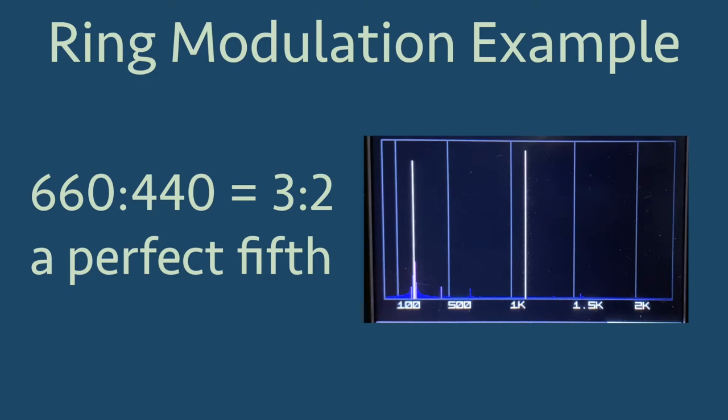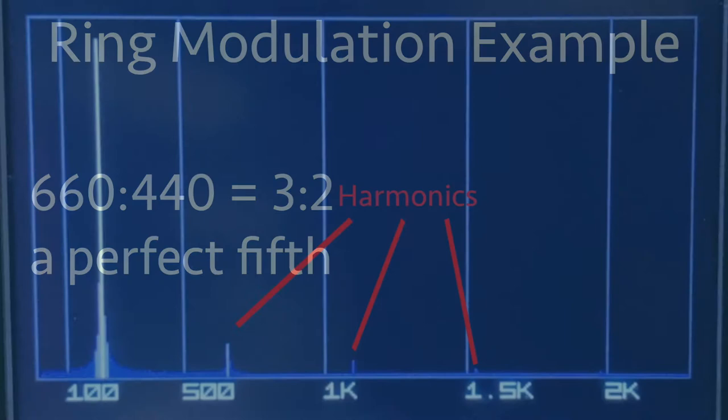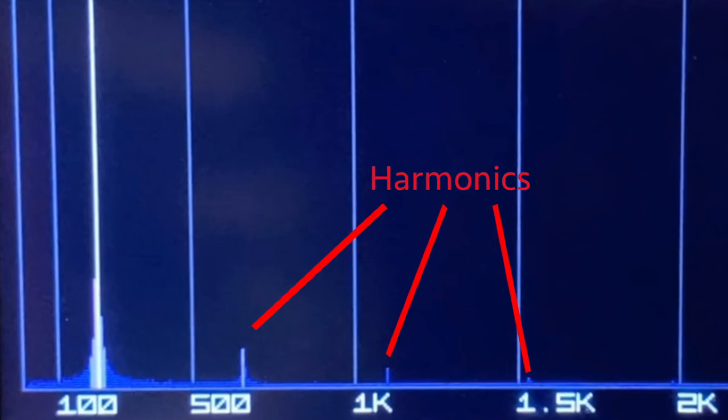The sound of ring modulation can get very interesting when we make the two waves move away from being harmonically related. Furthermore, if we use waveforms that have a lot of harmonic content, like sawtooth waves, then the result will have sums and differences of all of those harmonics.